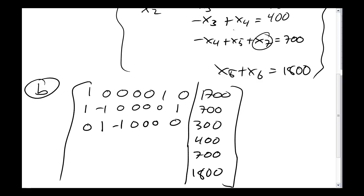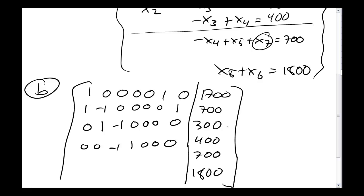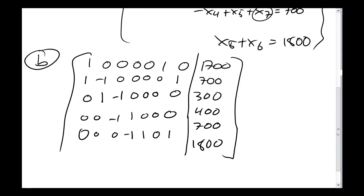For the 400 row, I have a negative 1 in my x3 column and a positive 1 in my x4 column, with all other entries zero. For the 700 row, x4 is negative 1, x5 is 1, x7 is 1, and all other entries are 0. Lastly, x5 and x6 are both 1 and all other entries are 0.